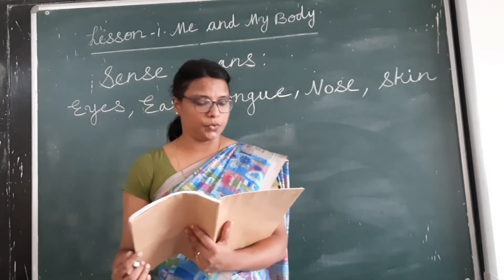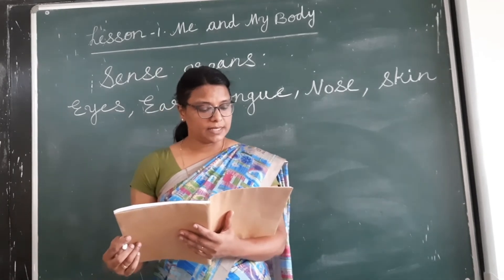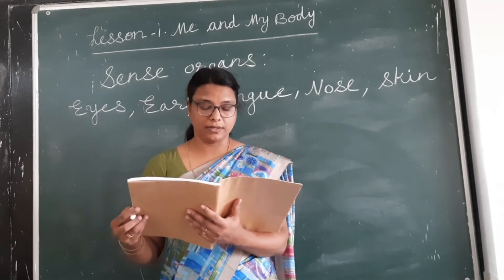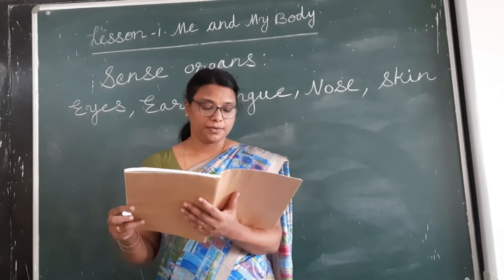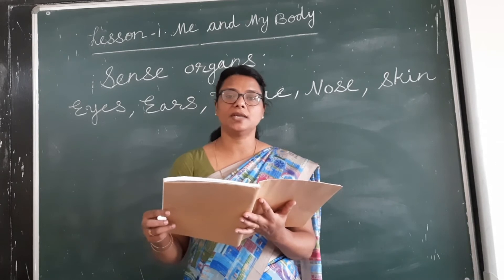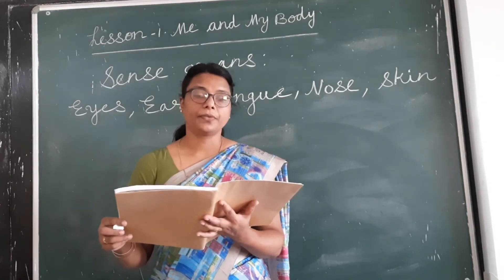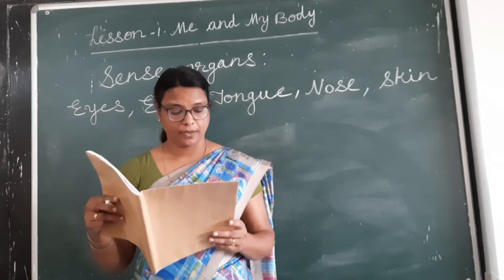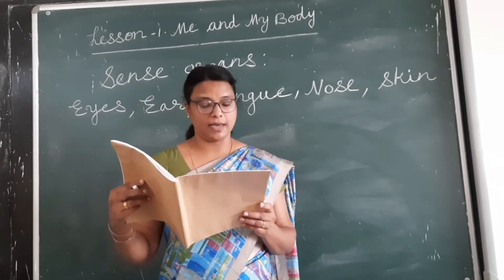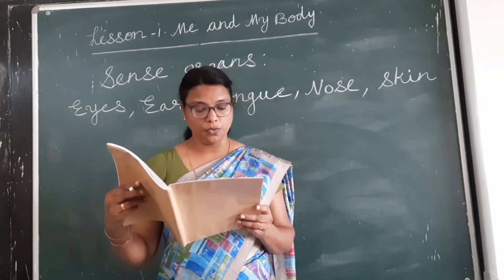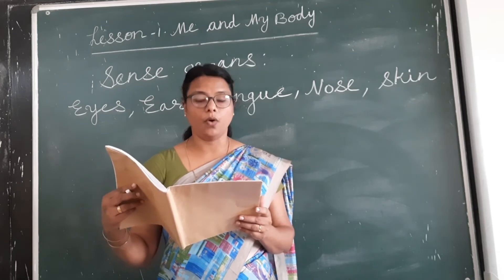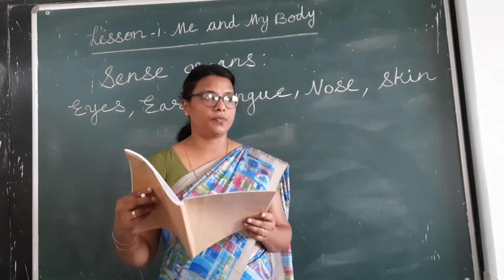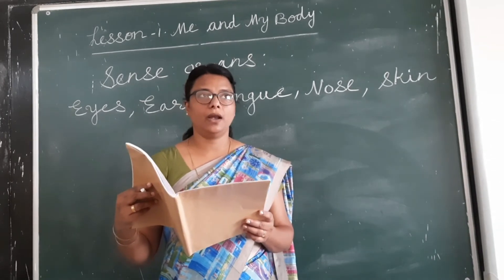These sense organs help us to feel the things around us. They help us to see, smell, hear, taste and feel things. Eyes enable us to see things around us — for example, we can see this book, this chalk, this board. Nose enables us to smell things. Smell can be pleasant or unpleasant. Nose also helps us to breathe.